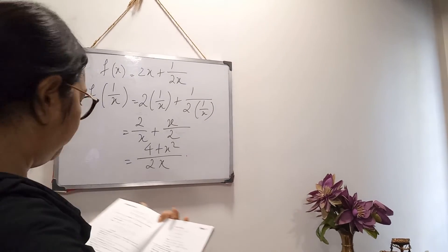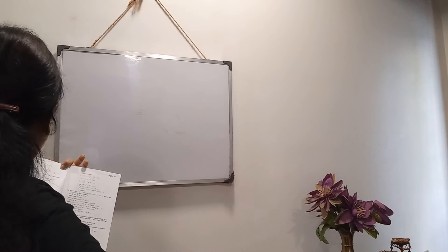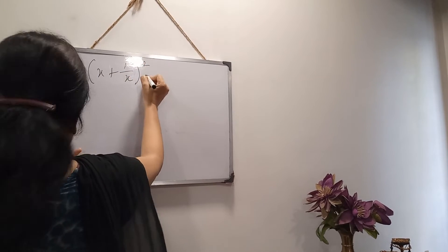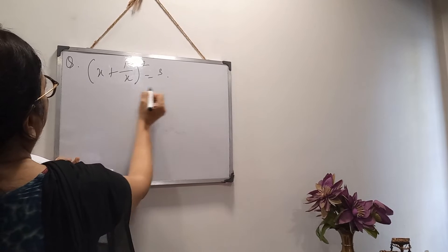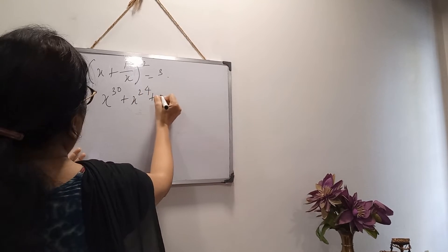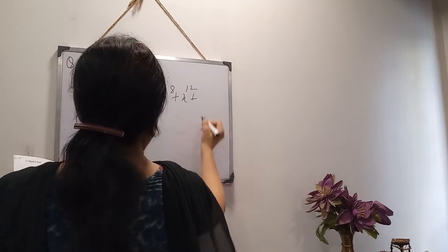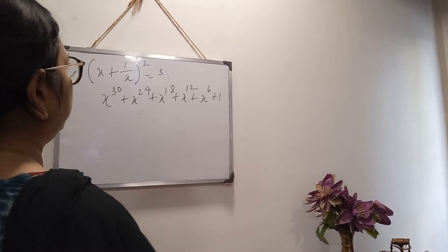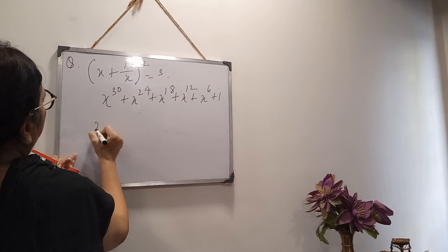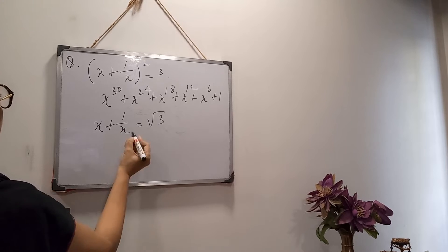Now another interesting sum. It is given that (x + 1/x)² = 3. Then calculate the value of x³⁰ + x²⁴ + x¹⁸ + x¹² + x⁶ + 1. From here we can write x + 1/x equals square root of 3. Then cube both sides.